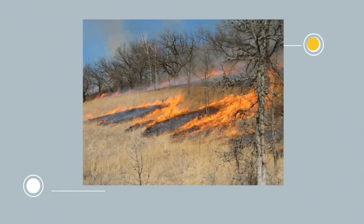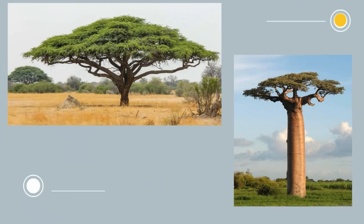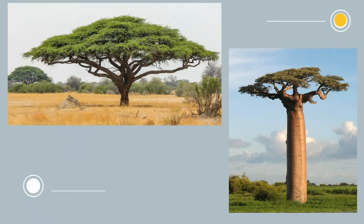Then you have a period of drought when fires may occur. These fires kill off enough trees to prevent a savanna from becoming a tropical forest. There are many types of grasses found in a savanna and also the occasional tree like an acacia or a baobab. These are found in Africa and India and can grow up to 80 feet tall.